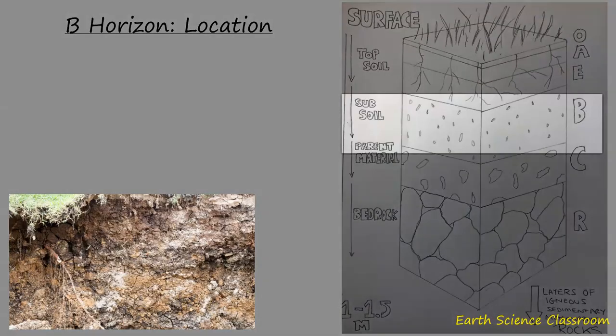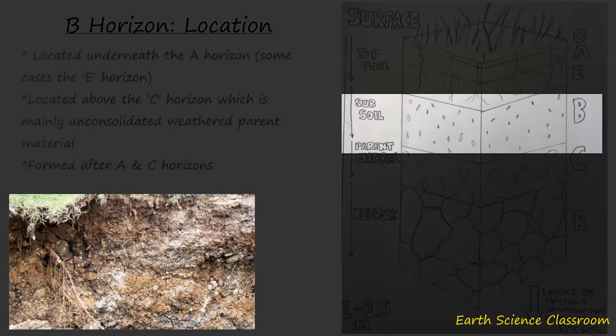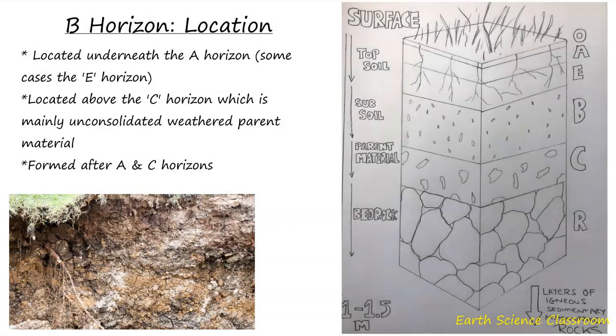In terms of general location, the B-Horizon or B-Layer is shown in the diagram on the right-hand side and it's called the subsoil. It is generally located below the O and A horizon — the topsoil — towards the surface horizon. If the soil is developed over a long period of time, it might have a thin E-Horizon, which stands for alluviation, which is the movement of transported material down through the soil from the top layers towards the B-Layer. This E-Horizon could be there in a small thickness layer above the B.